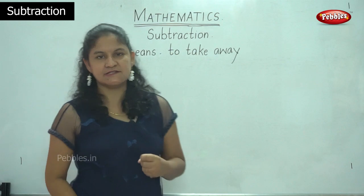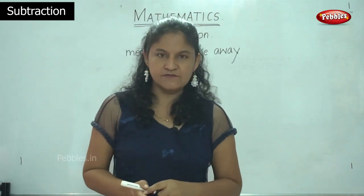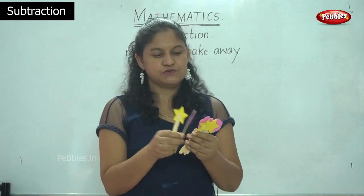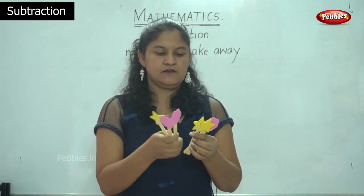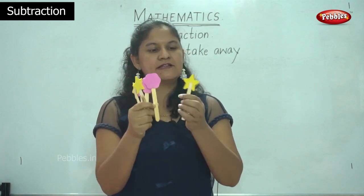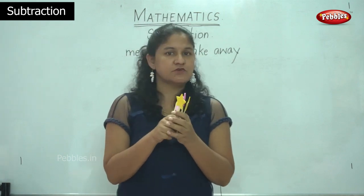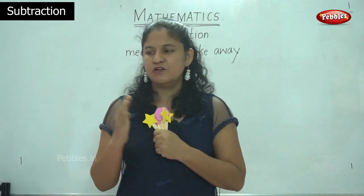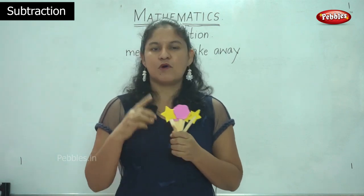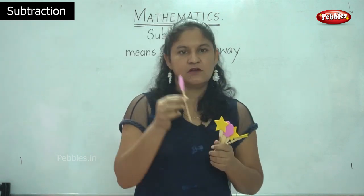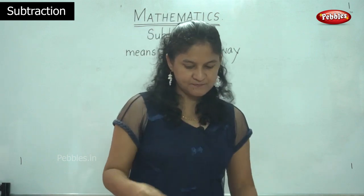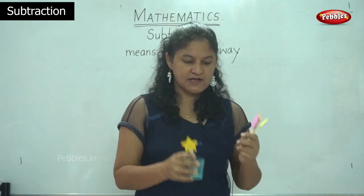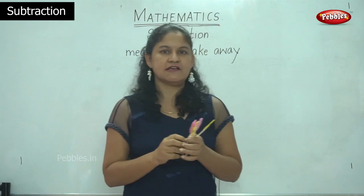To take away means, for example, I have one, two, three, four, five and six ice creams. With these six ice creams, I'm going to share them among my friends. I have two friends with me and I'm giving them each one ice cream — one friend one ice cream and another friend another ice cream. So I have six ice creams and I've given away two ice creams.